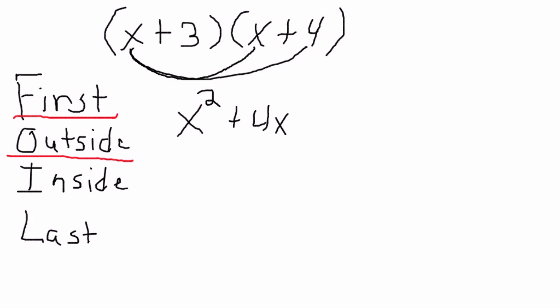Now let's move on to the next letter — inside. It means we're going to multiply the numbers that are in the inside part of the expression, which are the 3 and the x. 3 times x gives us 3x.